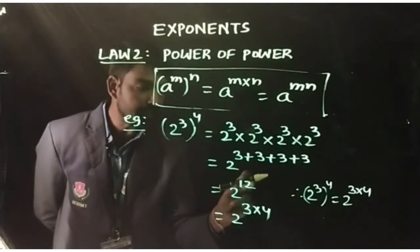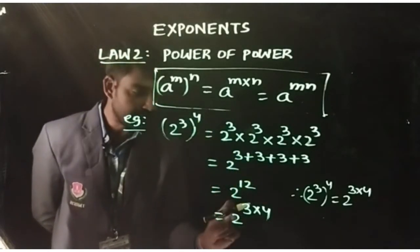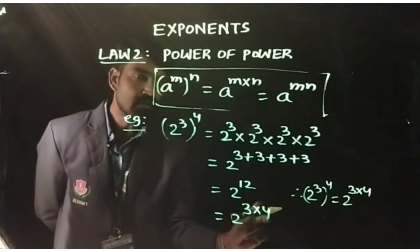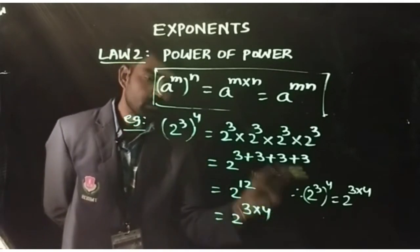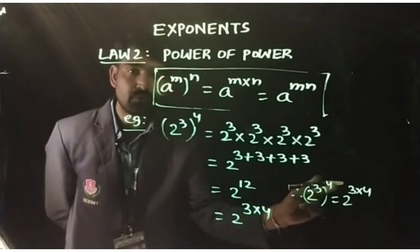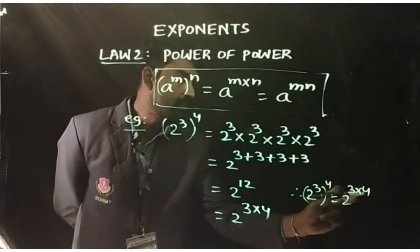Now, 12 we can write in terms of 3 and 4, that is 2^(3×4). Therefore, our formula: (2^3)^4 equals 2^(3×4).